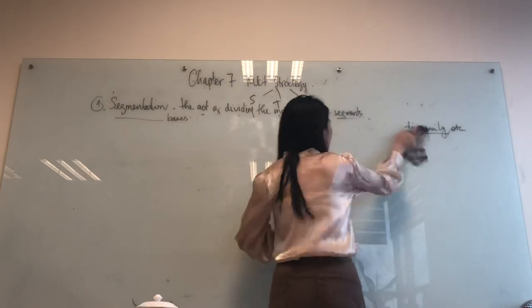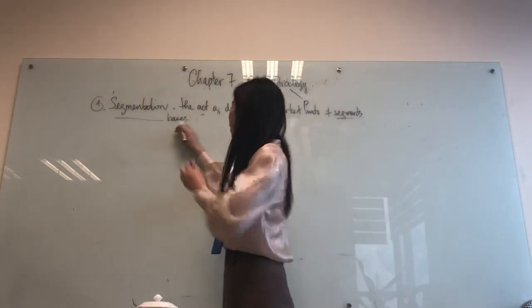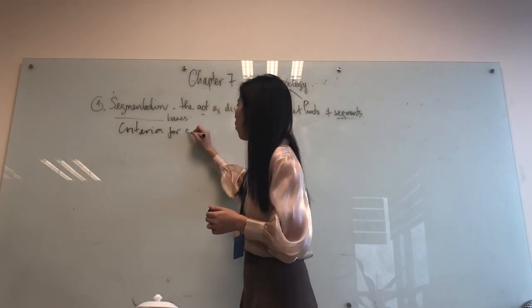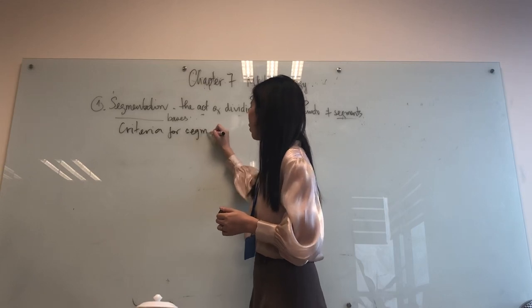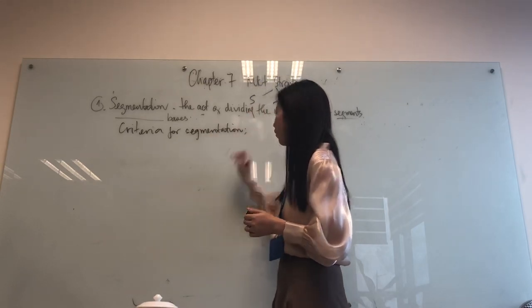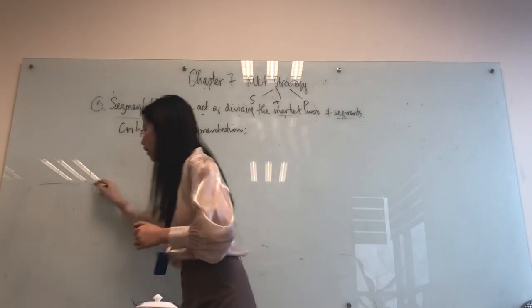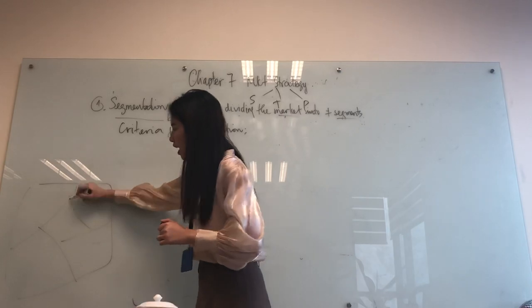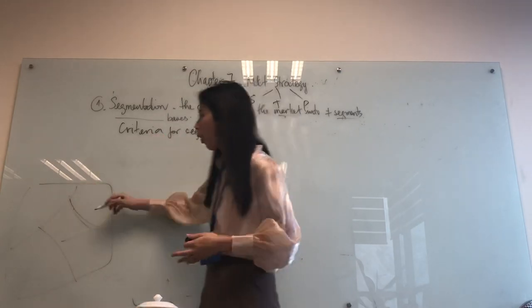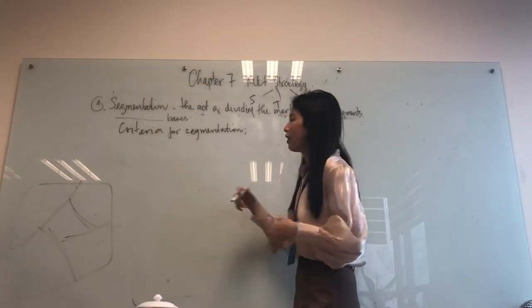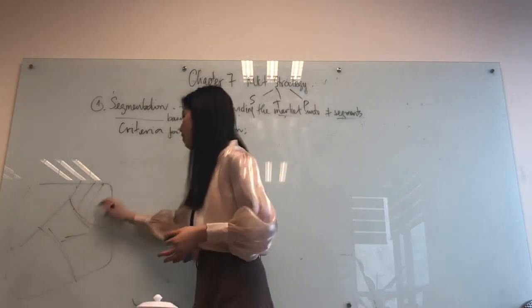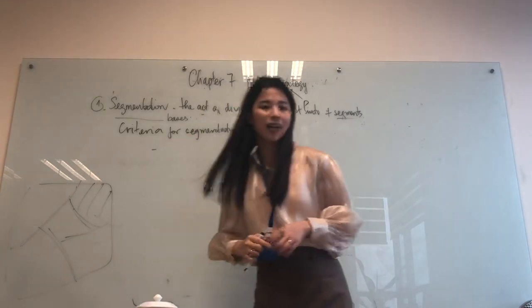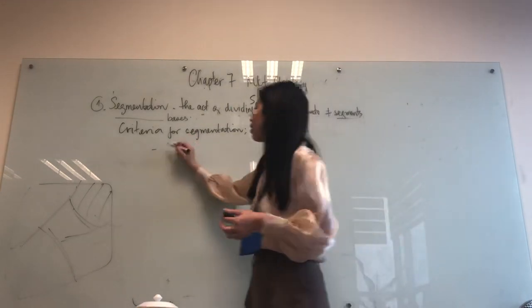Those are the four main segmentation bases we can use. Now let's look at the criteria for segmentation. When you divide the market into smaller groups, there are requirements those segments must satisfy. First, the segment must be substantial — meaning it must be big enough to make a profit.